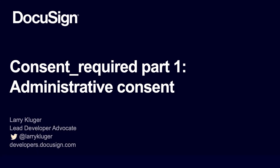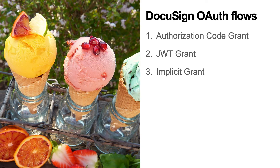From DocuSign, consent required, administrative consent. I'm Larry Kluger, lead developer advocate for DocuSign. DocuSign supports three different OAuth flows for our APIs: Authorization Code Grant, JWT Grant, and Implicit Grant.